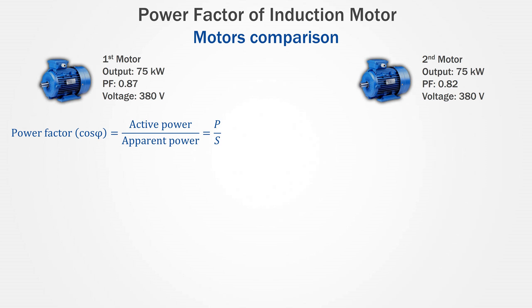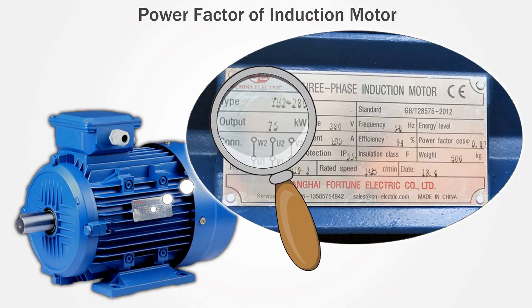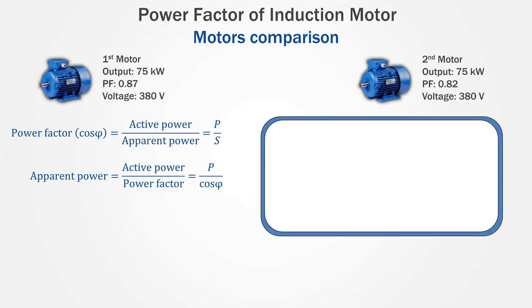Power factor is the ratio between real and total power in a circuit, and by transposing this formula we can get the apparent power. But first we need to do some calculations. The nameplate shows 75 kW, but this doesn't mean the motor actually delivers 75 kW — the actual load will determine the power output. If the motor is fully loaded, the input will be larger than the rated power because the motor has losses. So we need to know the input power, and to find it we use the efficiency formula. Transposing that formula gives us the input power.